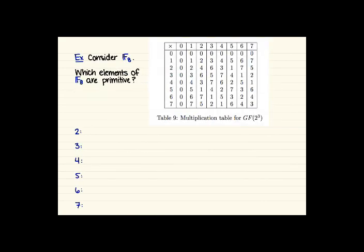So looking at the multiplication table, we're going to figure out which elements of F8 are primitive. Starting with 2, 2 to the 1 is 2. Then looking at 2 squared, we can do 2 times 2. So in the table, looking at 2 times 2, we see we get 4 there. So 2 squared is 4.